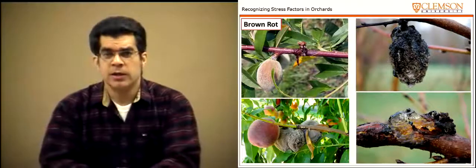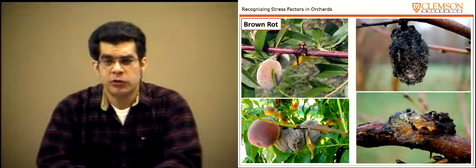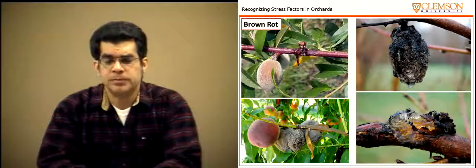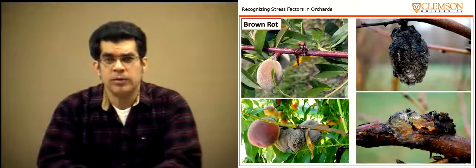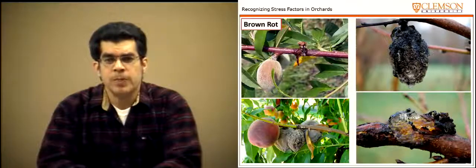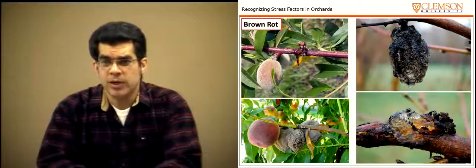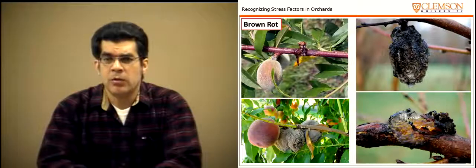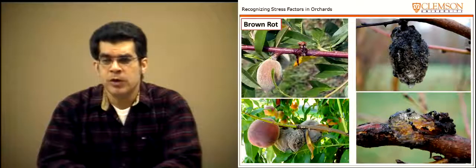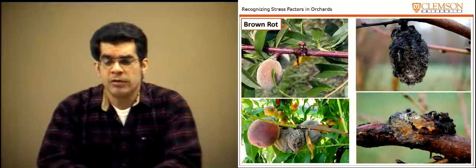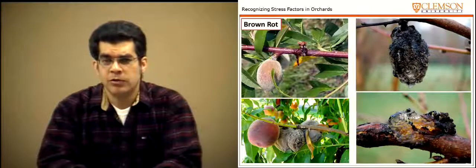Brown rot or Monilinia fungus is also a problem creating stress in peach orchards. When a blossom is infected, we can have blossom blight forming a canker. Infected fruit and mummified fruit left on the tree serve as a source of fungal inoculum for spring infections the following year if not removed. Wound gumming associated with cankers on shoots will cause those shoots to die and become unproductive, so this disease needs to be managed.